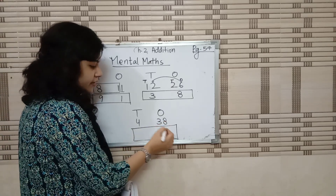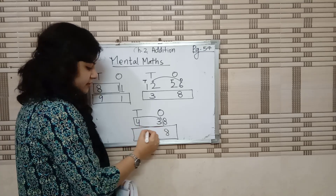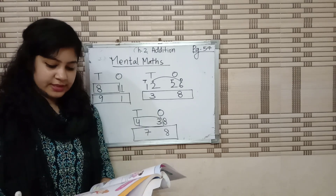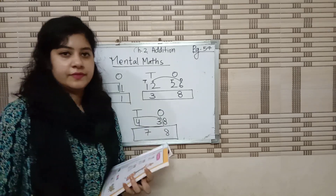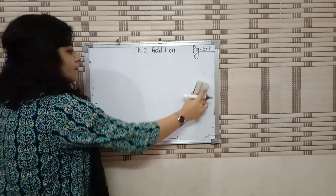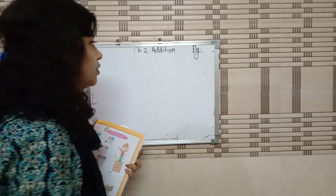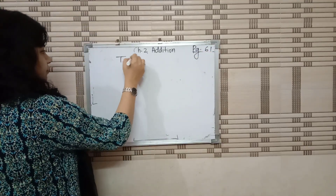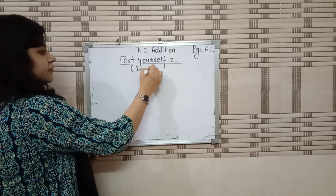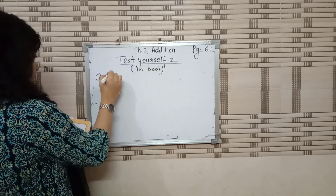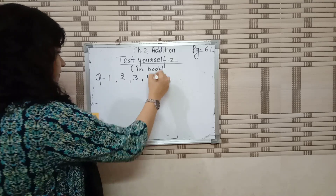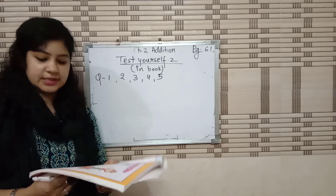On page number 61, Test Yourself — this is your homework. You have to do it in the book only. Question number 1, 2, 3, 4, and 5 — all of these you have to do in the book. Question number 6 and 7 we will do in the notebook.